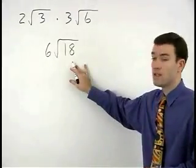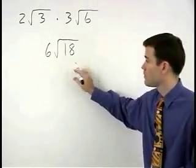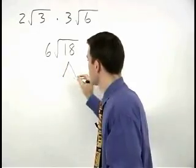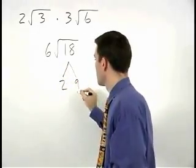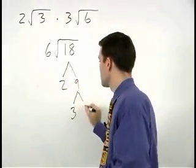Notice that the square root of 18 breaks down. 18 is 2 times 9, and 9 is 3 times 3.